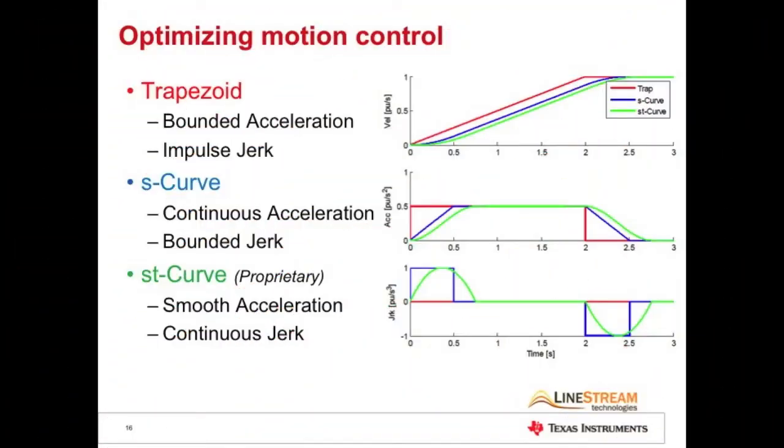In most applications, we've got to find a way to transition from one speed or position to the next. The motion engine allows you to enter the acceleration and jerk, and then it automatically generates the best trajectory to satisfy the user entered jerk and acceleration constraints for each move.